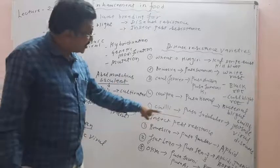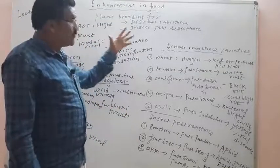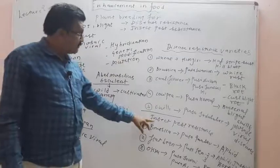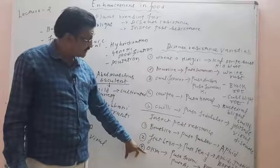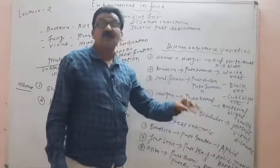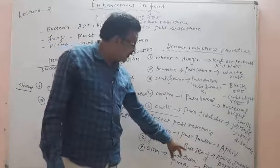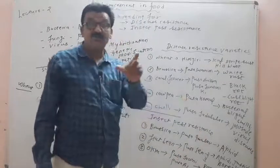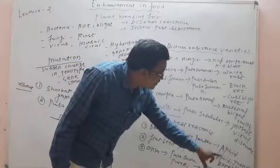Insect pest resistant varieties can be developed by hybridization method, genetic modification, or mutation. Insect pest resistant varieties include Brassica, flat bean, and okra. The Brassica variety Pusa Gaurav shows resistance against aphid insect pest. The flat bean varieties Pusa Sem 2 and Pusa Sem 3 show resistance against aphid, jassid, and borer insects.